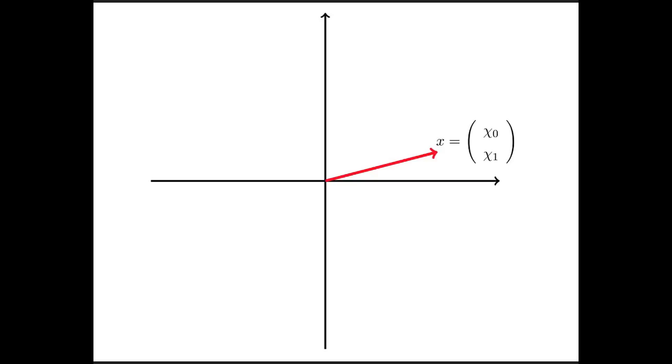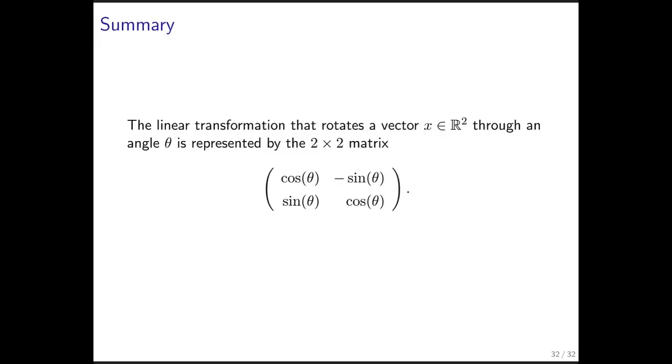So, if we start with an arbitrary vector x now, and we rotate that vector through theta, we know that that's just r theta of that vector. And we now know that that's the same as multiplying the vector by this 2 by 2 matrix. And when we do that, we get the following result. So, the linear transformation that rotates the vector x through an angle theta can be represented by this 2 by 2 matrix.